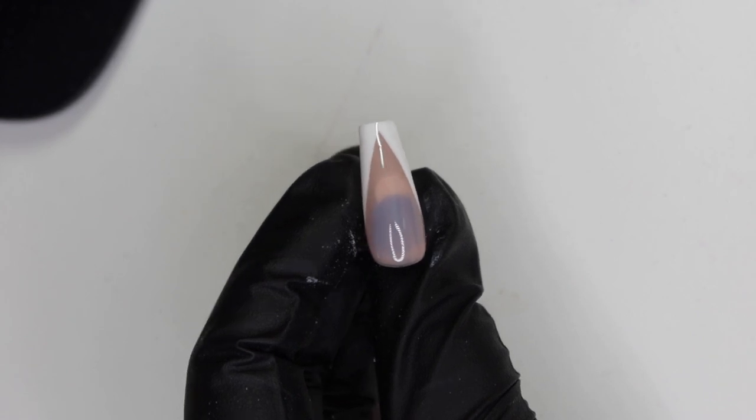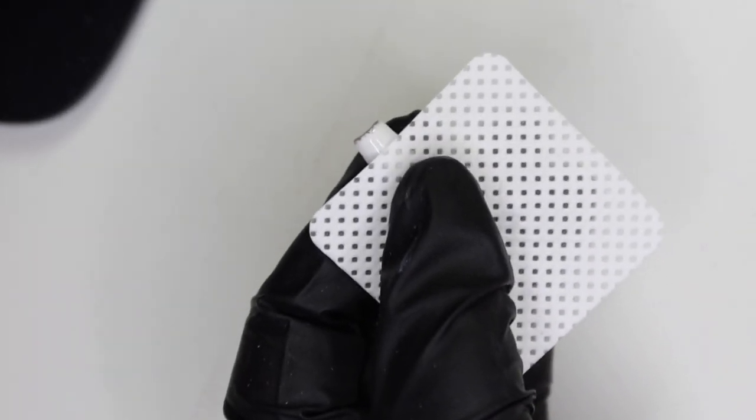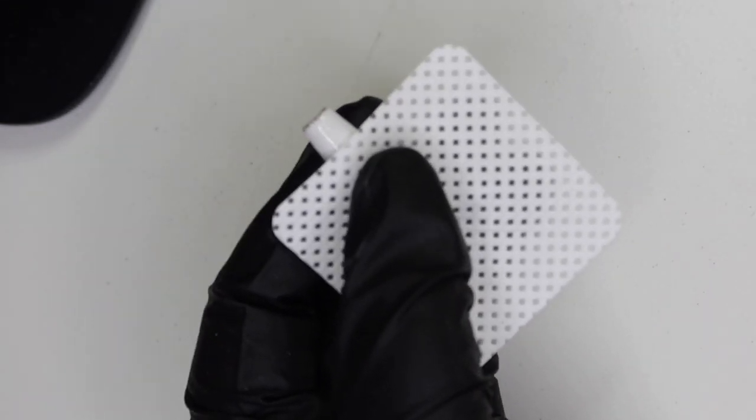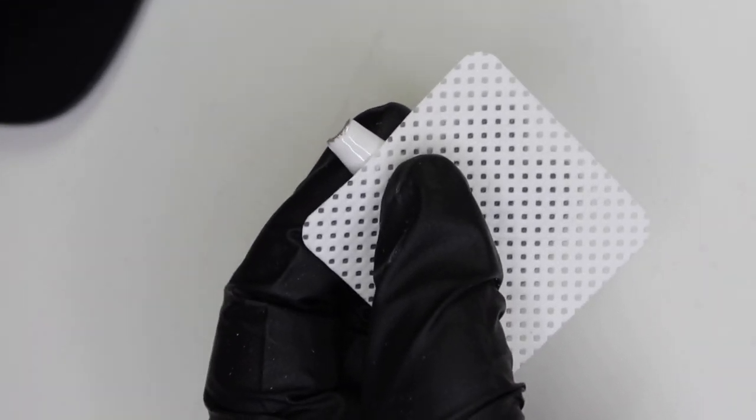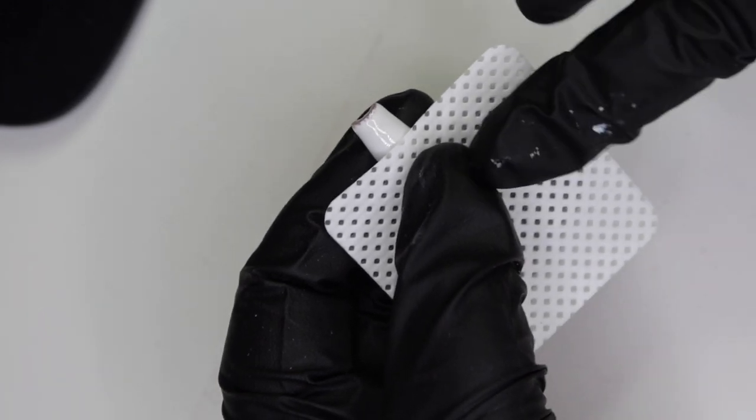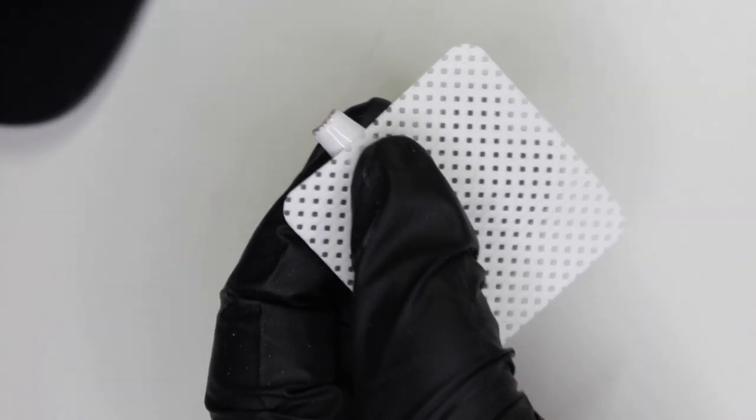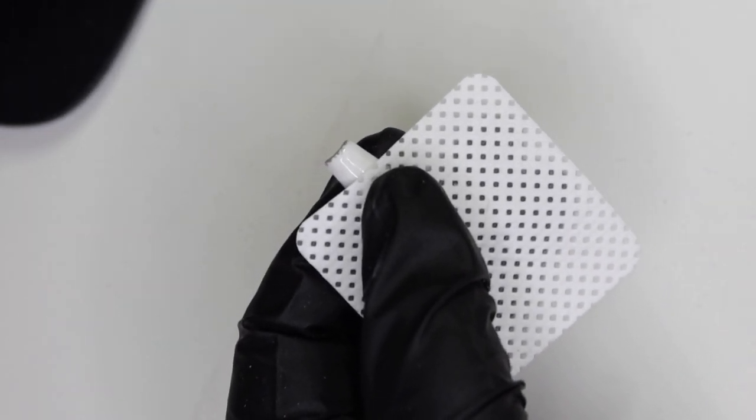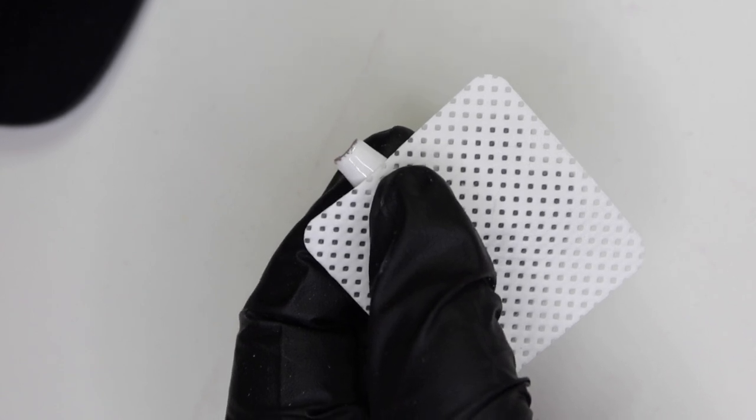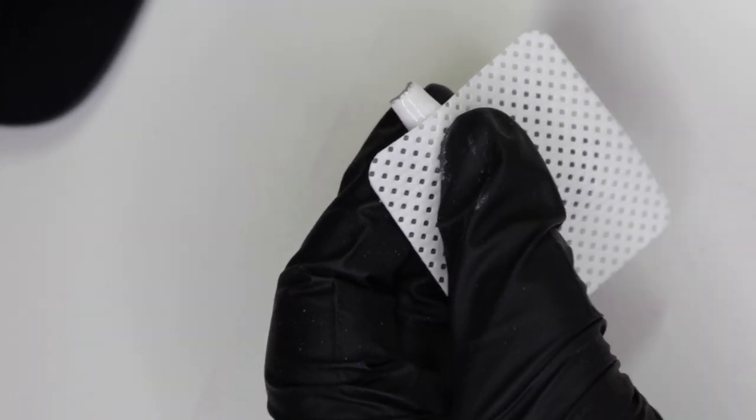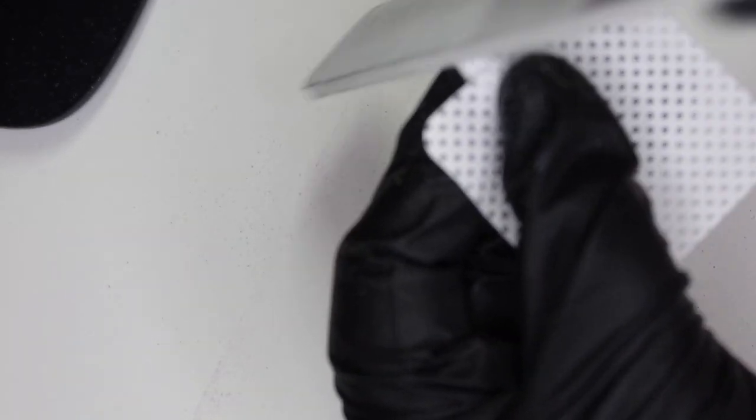Last but not least we're going to do the French tip which also looks crazy at the tip of the nail, so we're just going to file that off. Again I'm using an 80 by 80 grit file and these little lint-free pads from Amazon.